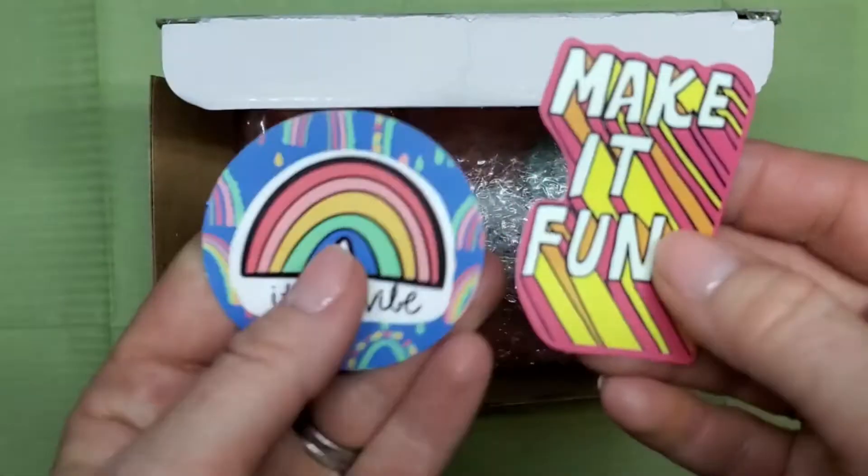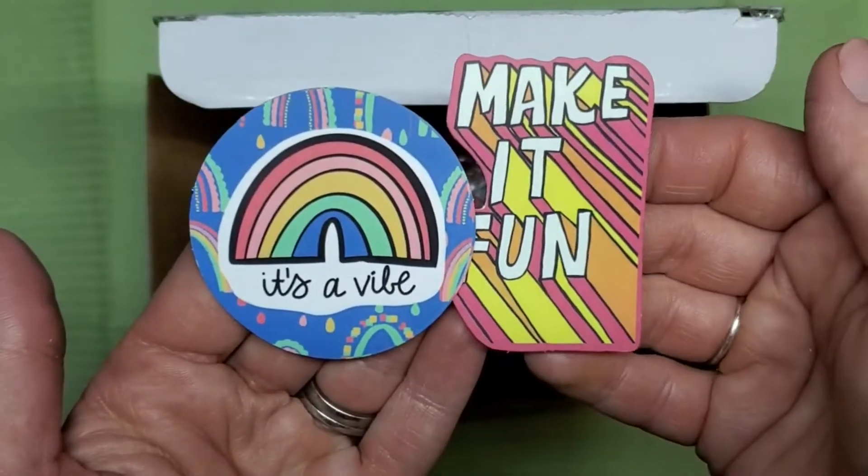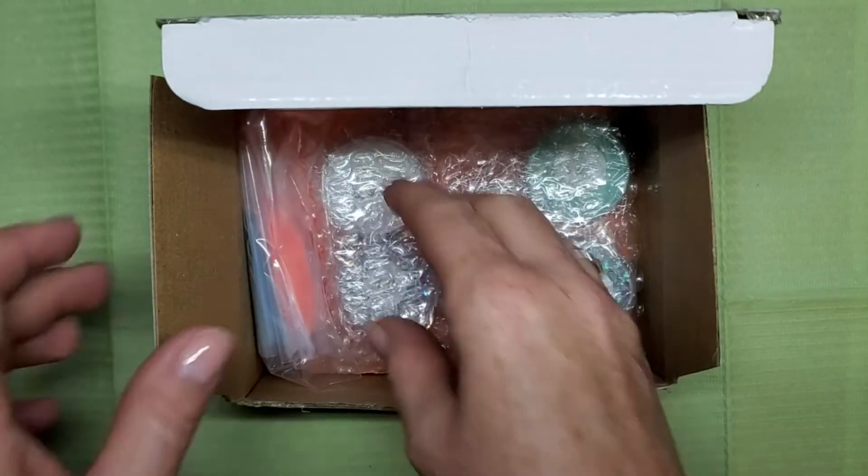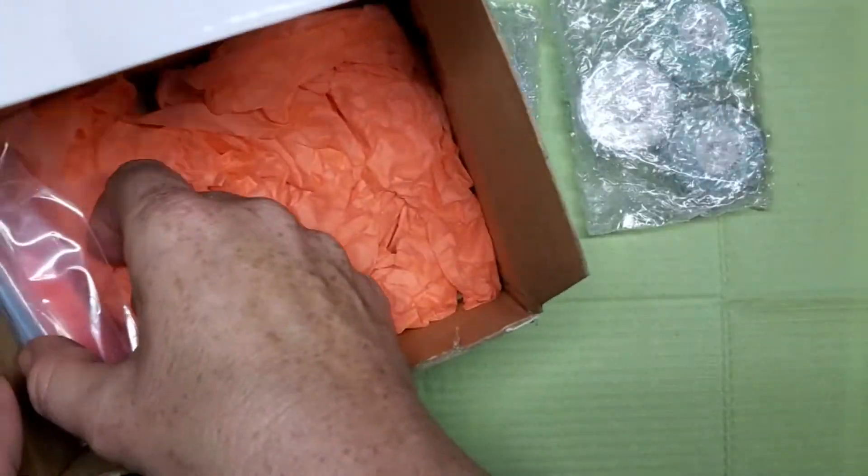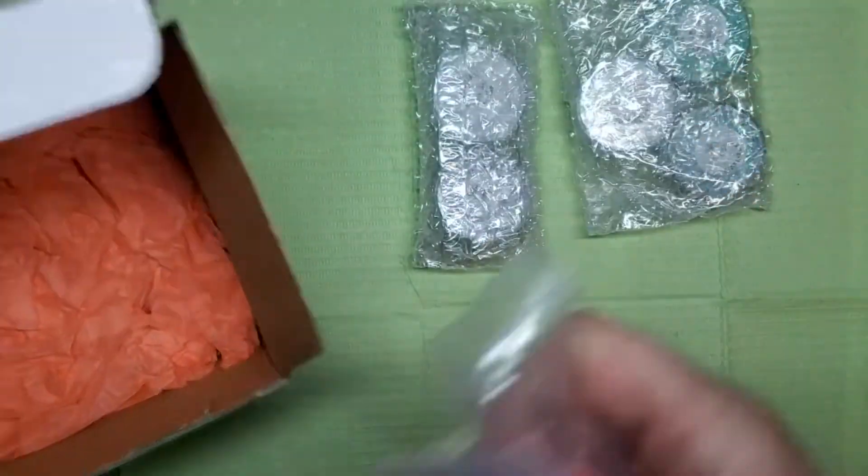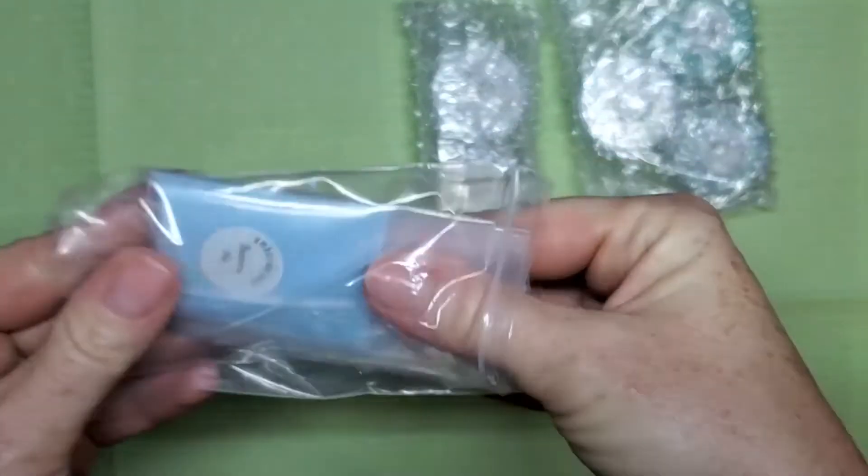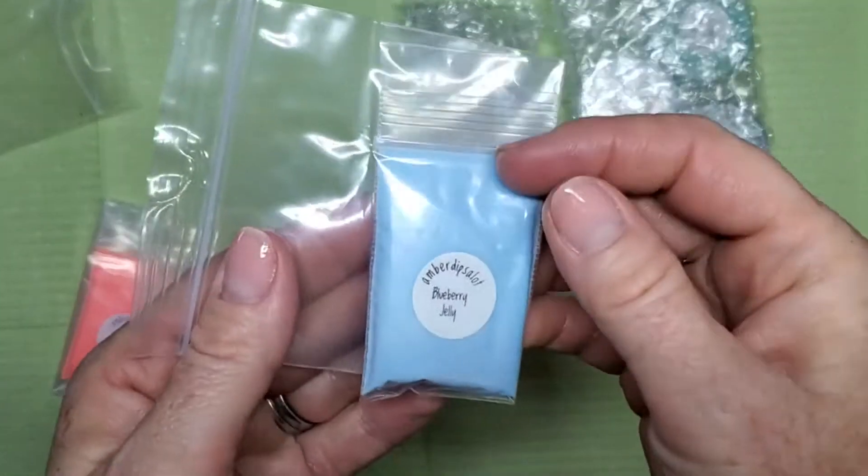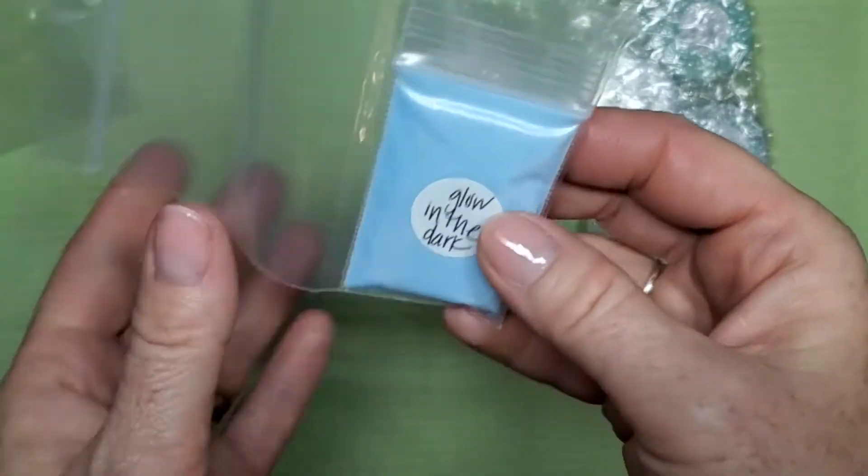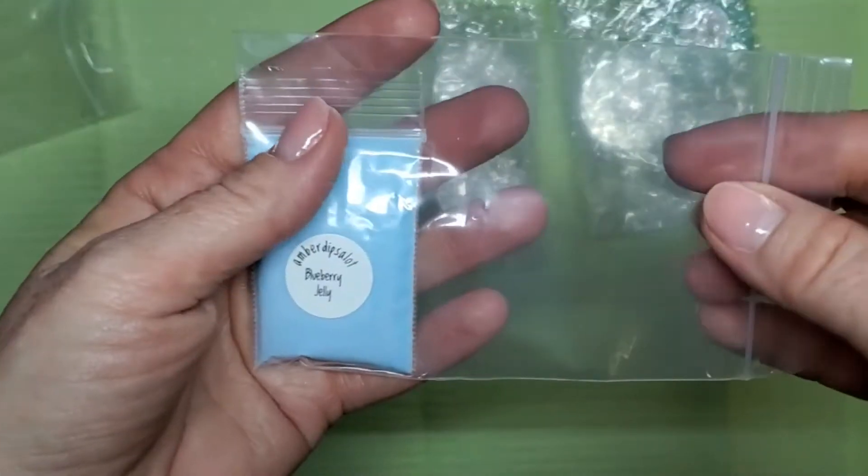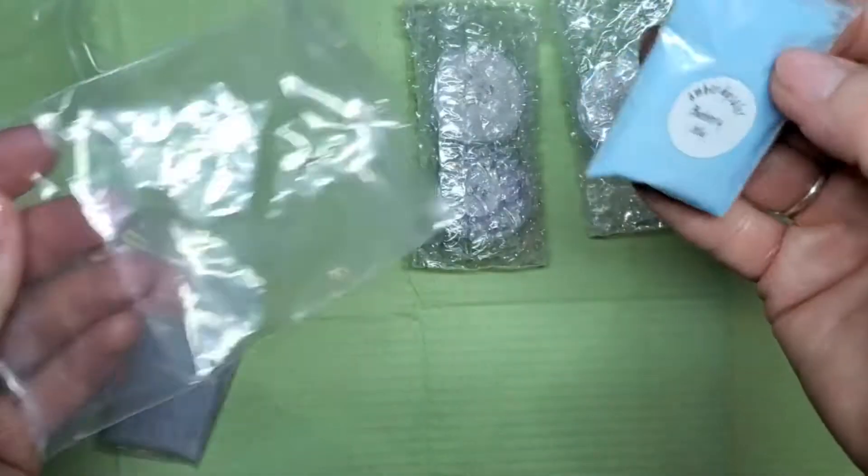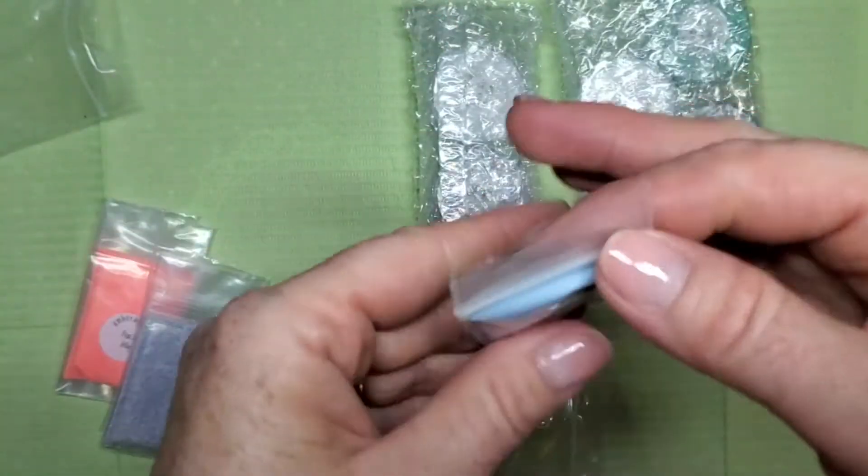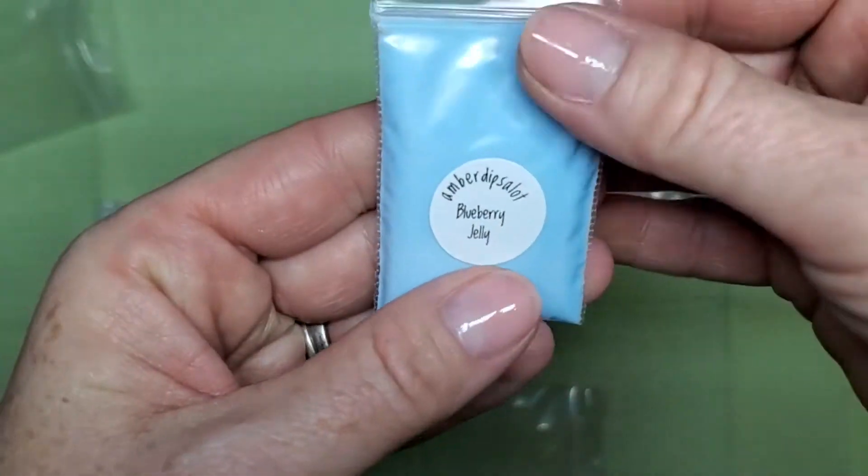We get some cute stickers here. Love it! I ordered five, and she always gives you some samples which are super cool. The first one is called Blueberry Jelly and this one glows in the dark. Oh, super cool! I love the way they're packaged too - no spillage or anything. Look at that! This is gorgeous.